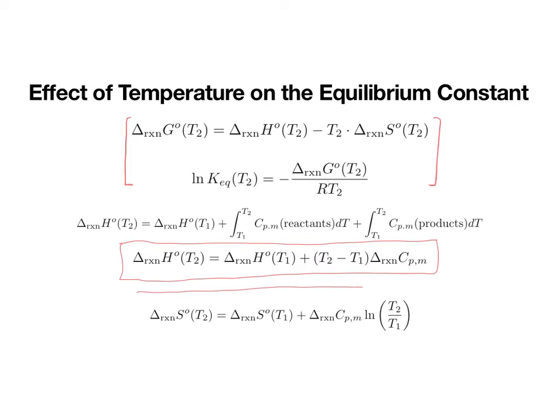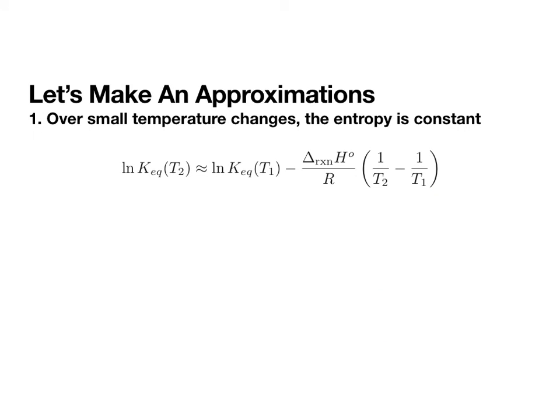We also can do something very similar with our delta S. Remember, we talked about how that is also temperature dependent. And we find that delta S is dependent also upon this change of the heat capacity. But this time, we're doing the natural log of the ratio of the temperatures, just based upon the difference between the formulas. If you're interested in this derivation, it is in your textbook.